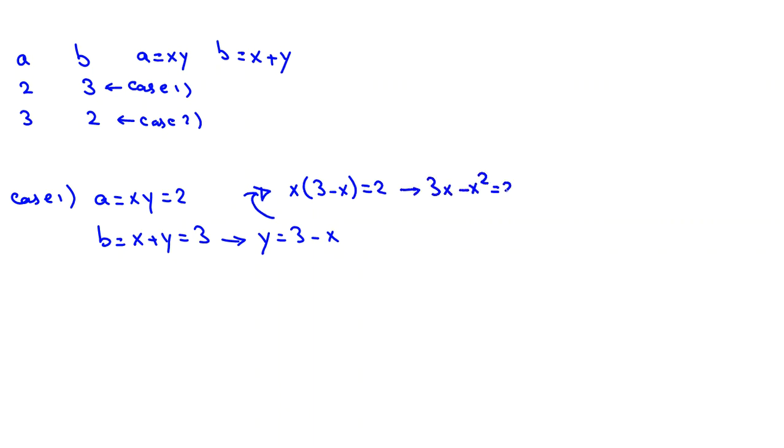3x minus x squared equal to 2. If we take all things to right hand side, x squared minus 3x plus 2 equal to 0. So we can say x minus 1 times x minus 2 equal to 0.